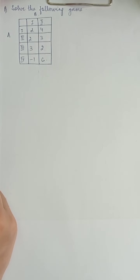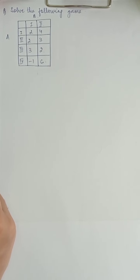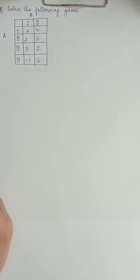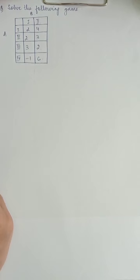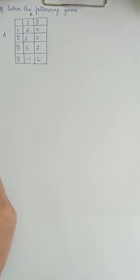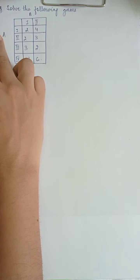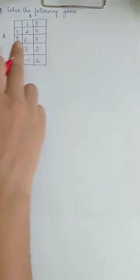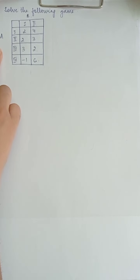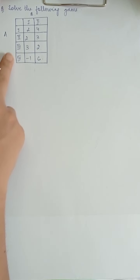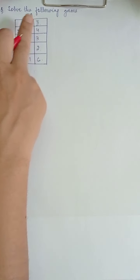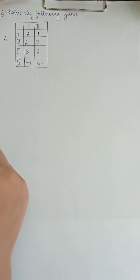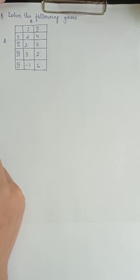Hello everyone, we are back with another video. This is about operations research, game theory. We have to solve the following problem wherein A is the maximizing player who has four options and B is the minimizing player who has two options. So we have to solve this game.